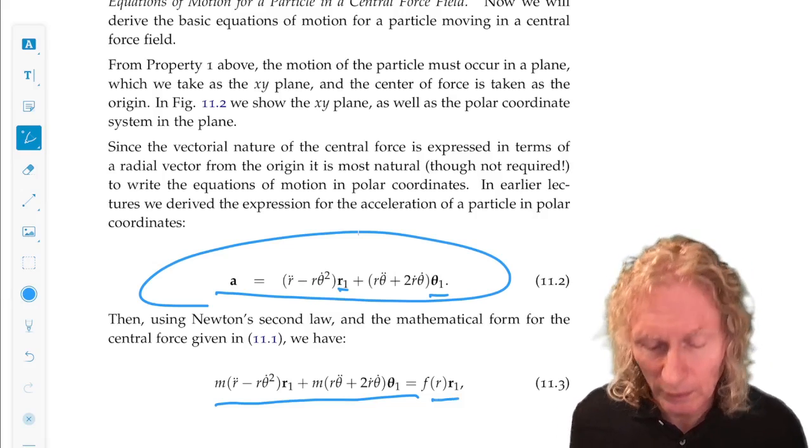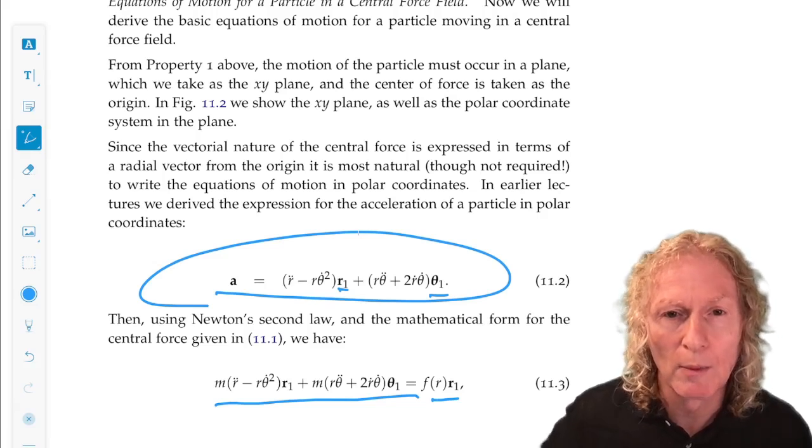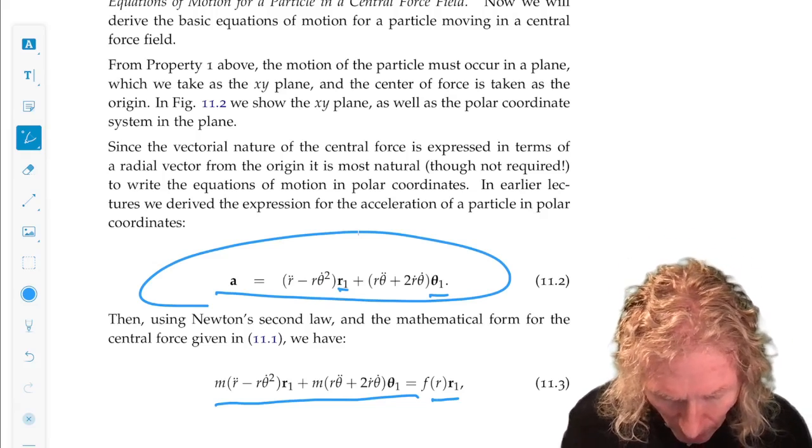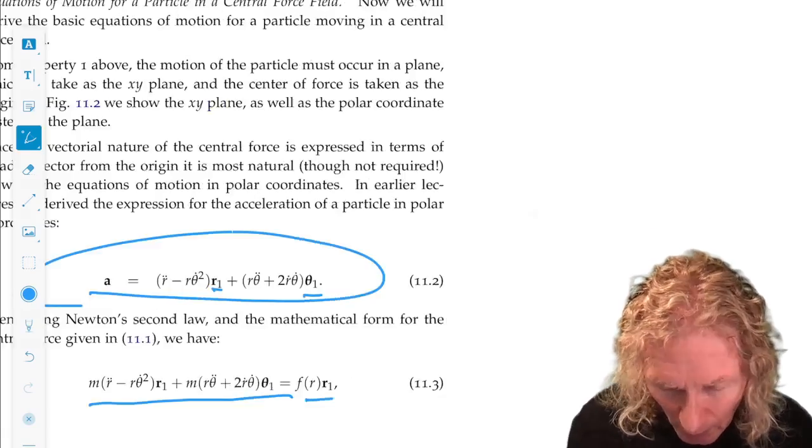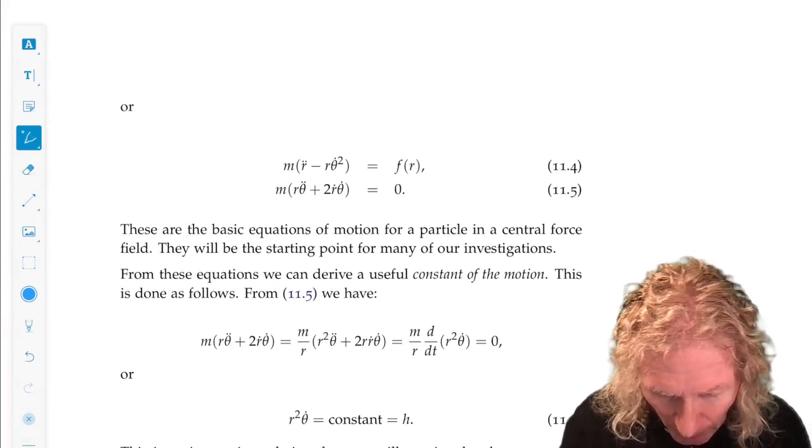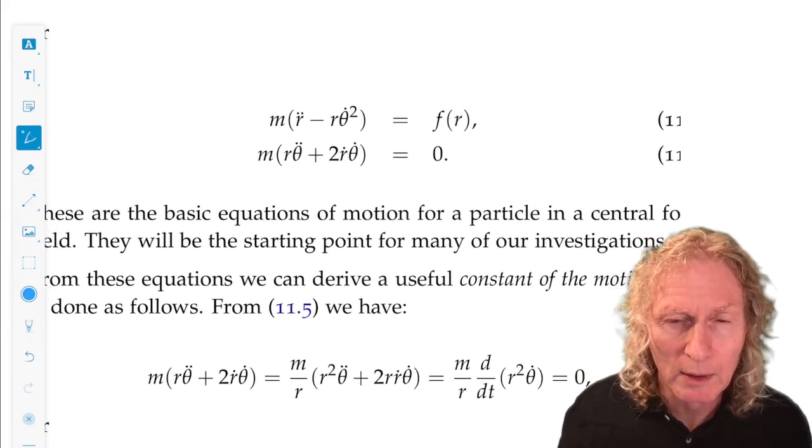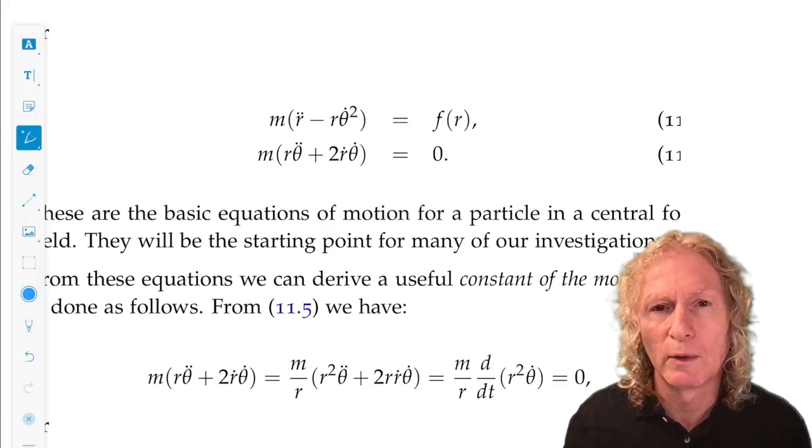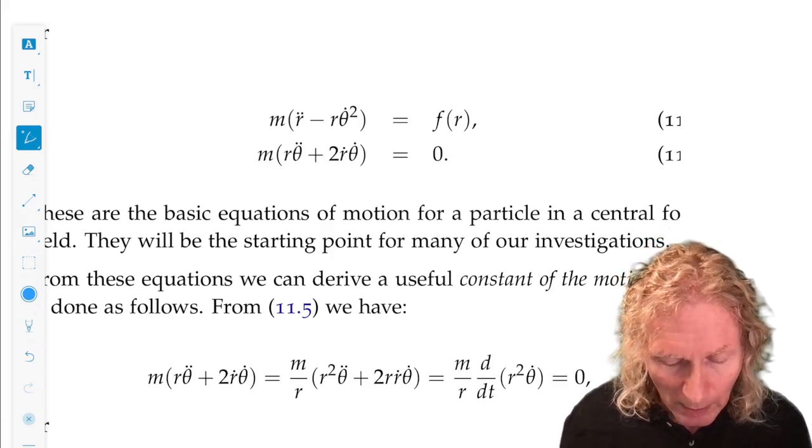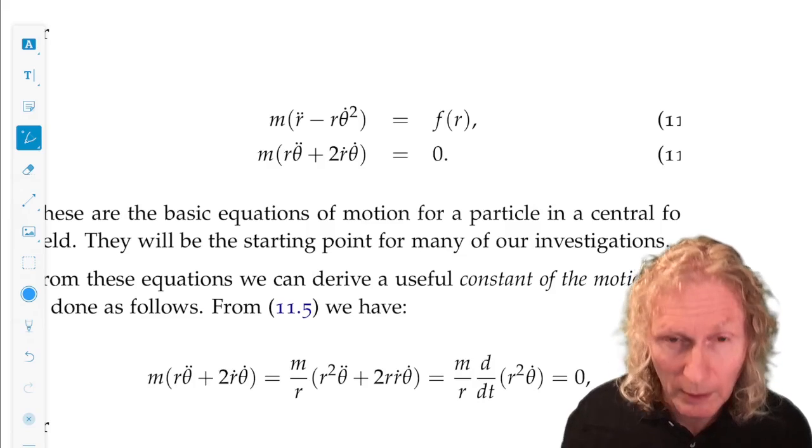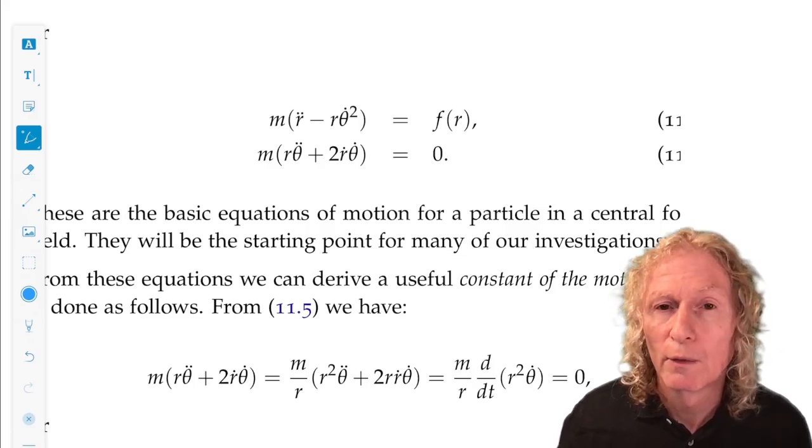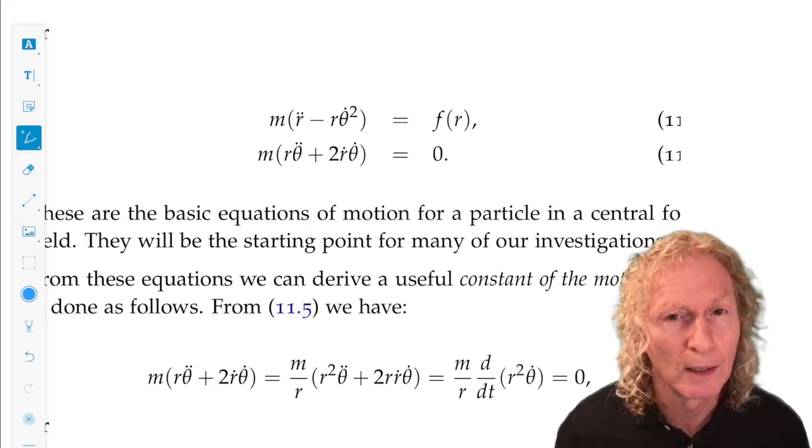These are Newton's equations. Now we can write down each component separately, the r₁ component and the θ₁ component. And I've done that here. We get equations of motion that are more complicated than anything we've seen so far because they are two second-order differential equations for two variables, r and θ, and they're coupled.